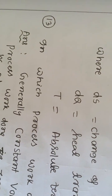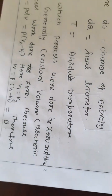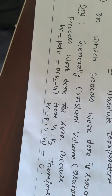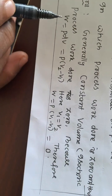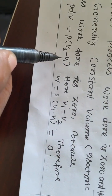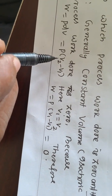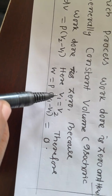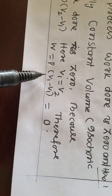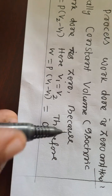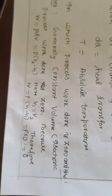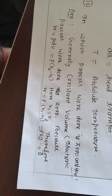In which process is work done equal to zero, and how? In the constant volume process, also called the isochoric process, work done is zero. Because W is equal to P × dV is equal to P × (V2 minus V1). Since dV means change in volume, and here V1 is equal to V2, therefore W is equal to P × (V1 minus V1) equals P × 0 equals 0. Hence, in an isochoric process, work done is equal to zero.